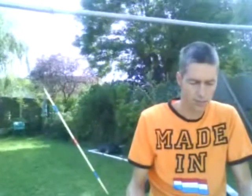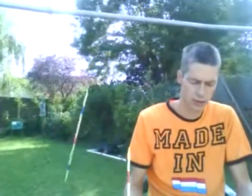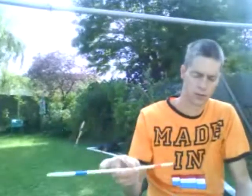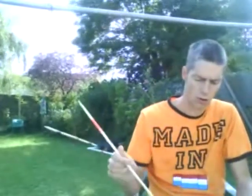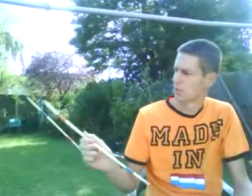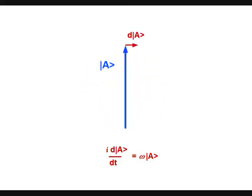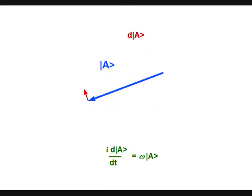Whether a microscopic quantum particle, or a macroscopic rod, or a needle, or a wheel spoke, or a twirling baton, or this spinning mikado stick — this evolution equation characterizes the rate of change of the orientation of the arrow.